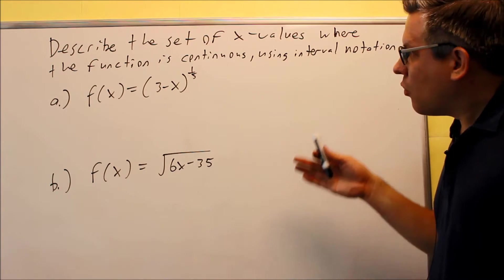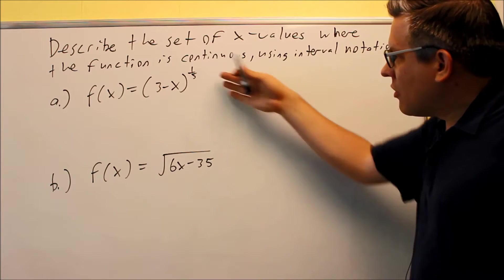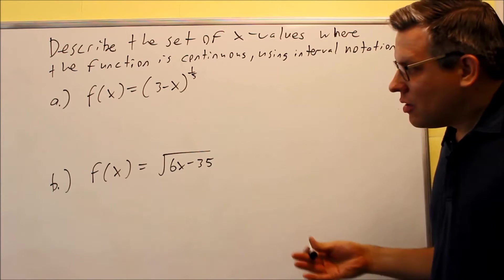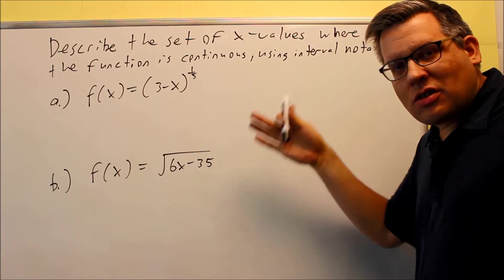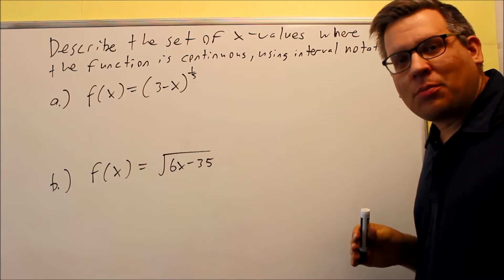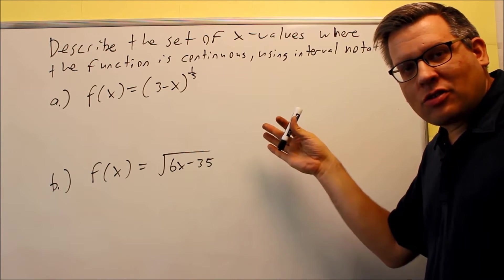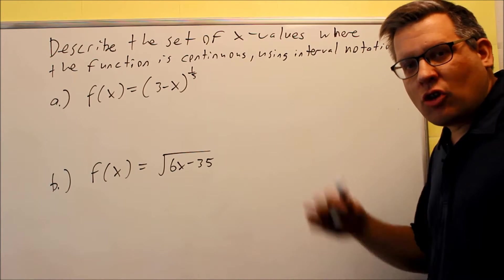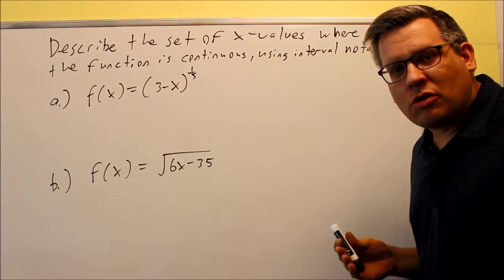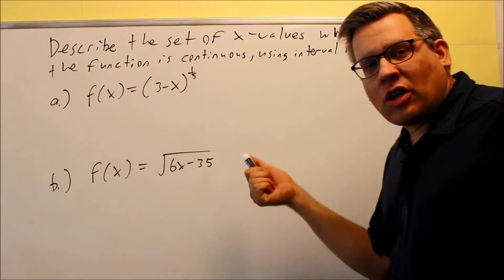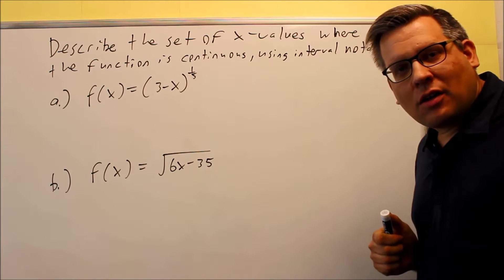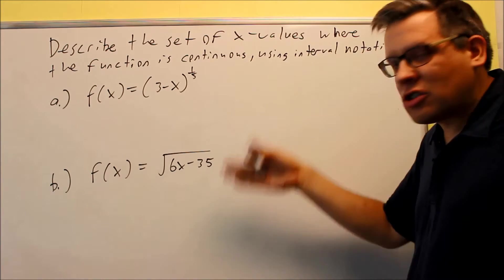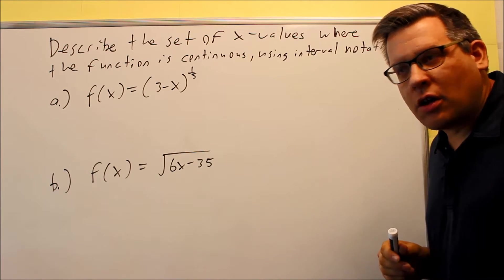The next type of problems we're going to talk about are ones where we're given some functions and we have to describe where it's continuous. You can think of these as kind of like doing domain type problems. In pre-calculus you did problems where you talked about where the domain is, so in fact domain goes right along with continuous. If you have a number that's not considered in the domain, that means that's a place where it's not continuous. Essentially we're doing the same thing as finding the domain here.